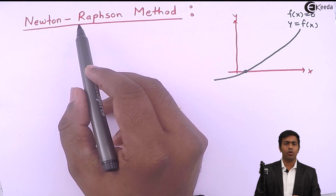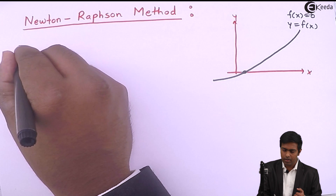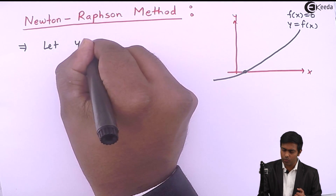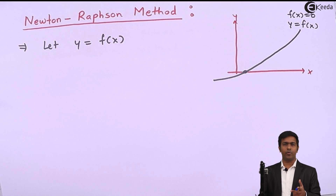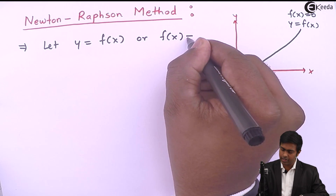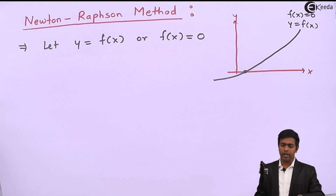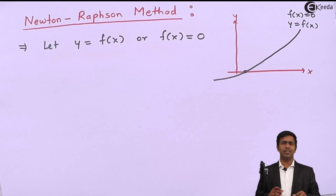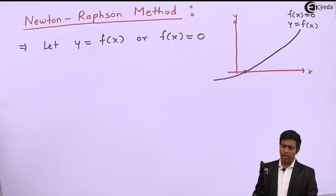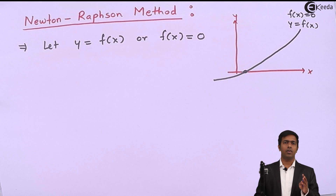Here we are going to use the algebraic method. In the algebraic method, we will consider one equation f of x. Let y equal to f of x be the equation for which we want to find the root, or you can say f of x equal to 0. Initially, what we do is we consider certain values of x and find out the values of f of x for each value of x.